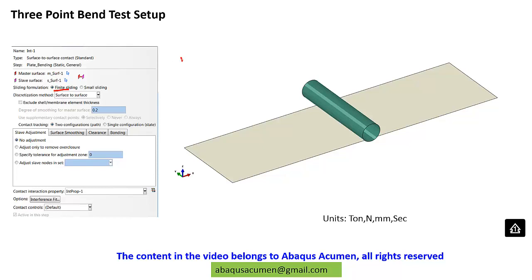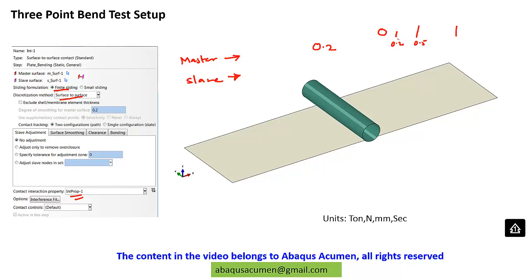When you define a contact you need a master surface and a slave surface. We'll do finite sliding with surface-to-surface contact. The requirement is you should have a master surface and a slave surface. The typical property for the contact is friction. We are going to assume 0.2 as the friction coefficient. Zero is a frictionless surface and one is a sticking surface, so 0.2 is somewhere in between.